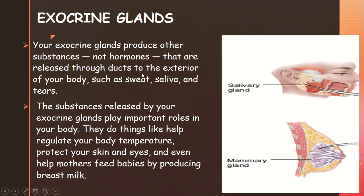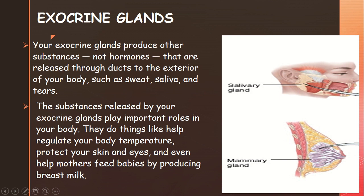These substances are released to the exterior of the body through a tube-like duct. The substances include sweat, saliva, and tears. Our body produces these and releases them through the duct. Importantly, exocrine glands do not produce hormones — they produce normal substances through these tubes.